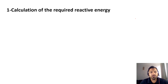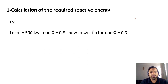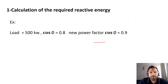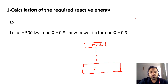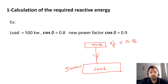Step 1 is finding out the reactive energy. Here's an example: I have a total load of 500 kilowatts and a power factor of 0.8, and I want to improve the power factor to 0.9. Consider this is your main distribution board — from the main distribution board, this is your load of 500 kilowatts. In the main DB, you have a power factor meter, and when power is applied, it shows a power factor of 0.8.